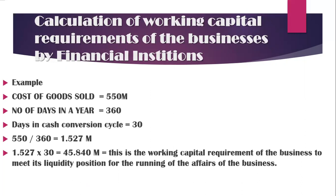That is 45 million, 840 thousand — against the original request of 50 million. The customer had put up a request of 50 million to the banking industry, but with the support of this formula, the amount calculated is what the bank will approve and confirm to their borrower in order to meet their needs. The customer can obtain this amount from the banking industry if they are satisfied with this result of 45 million, 840 thousand. This is how banking industries practically calculate the working capital requirements of different customers' businesses and different business models.